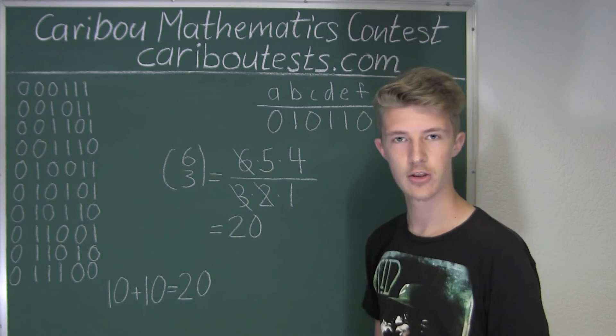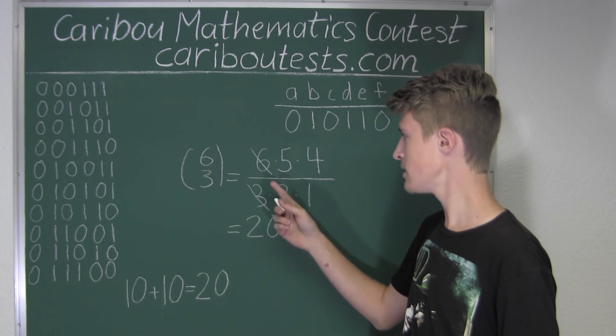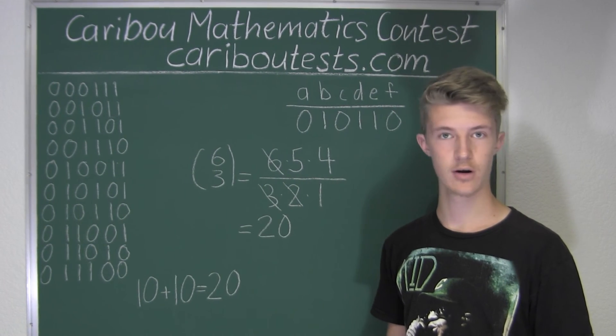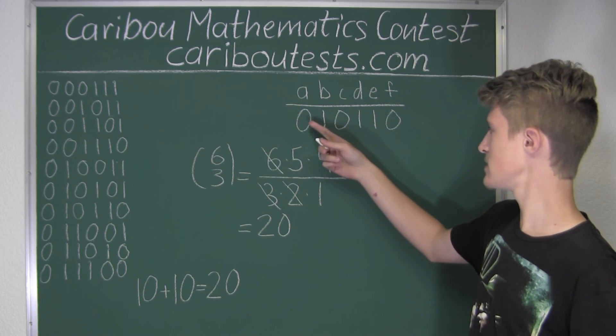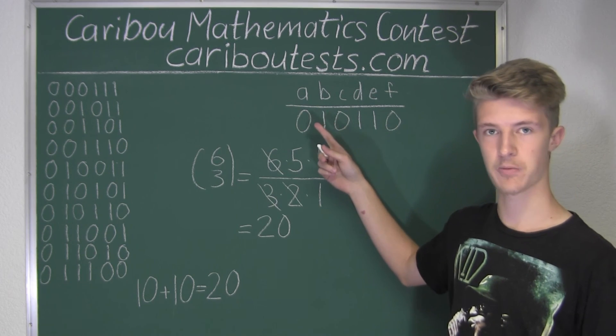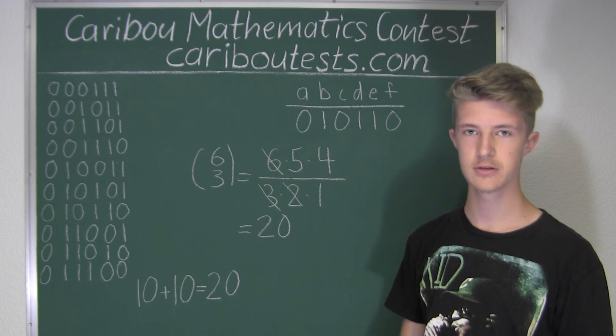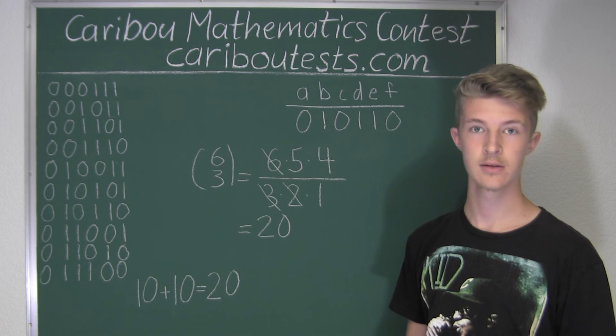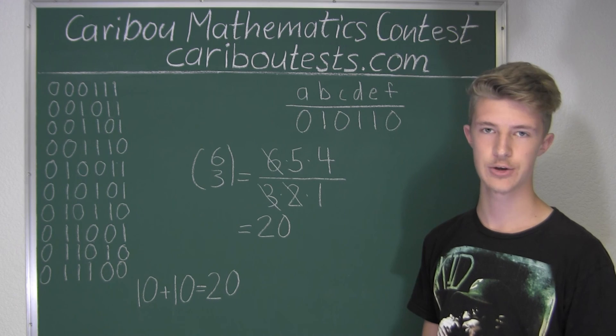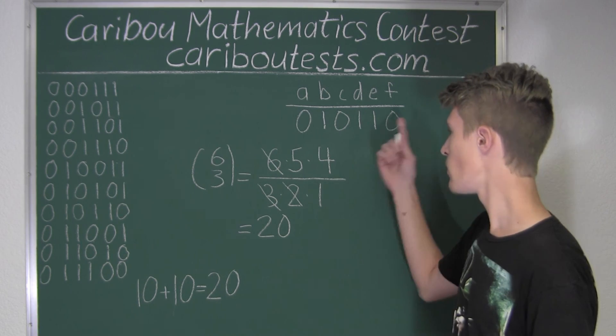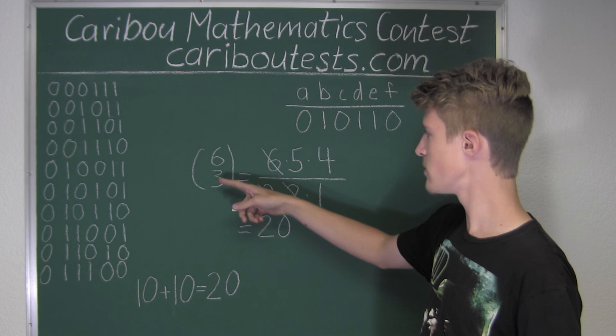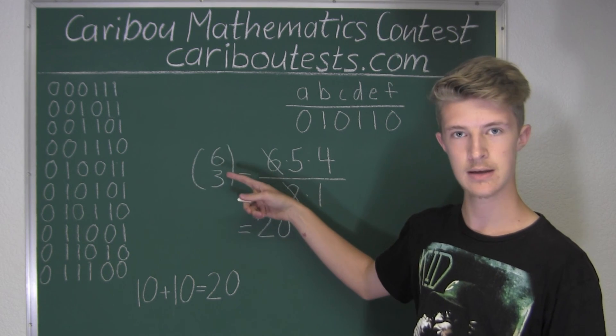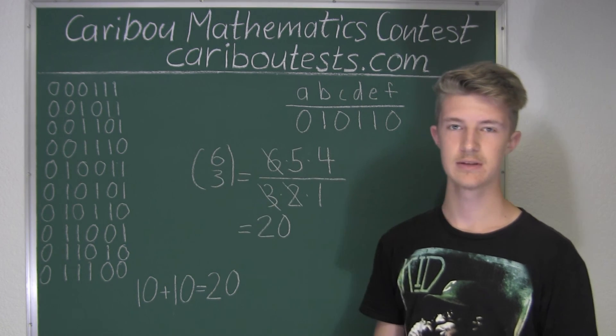All right, now the beauty of the second method is that it can be used for much larger numbers. So now since here, for example, here we had three zeros and three ones, let's say now we had 12 zeros and 15 ones. So then that would give us 27 zeros and ones. Well, then this top number would be 27, and then this bottom number would be either 12 or 15, because they would both give the same answer.